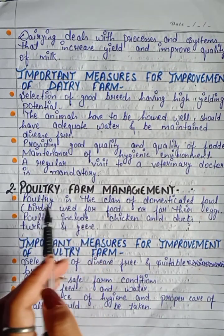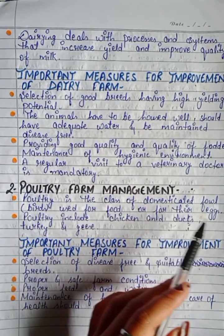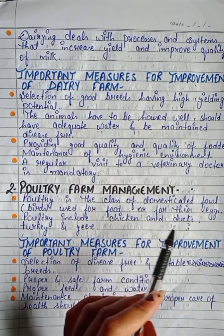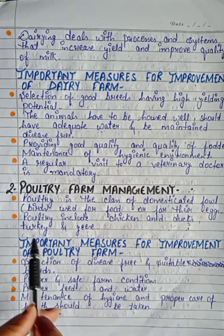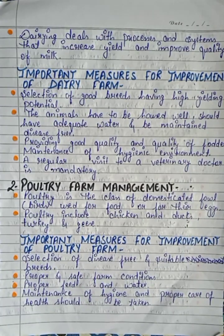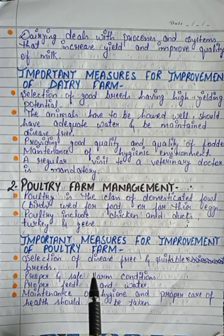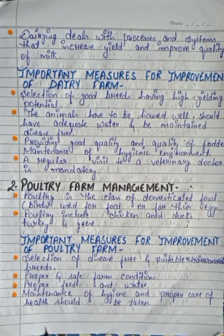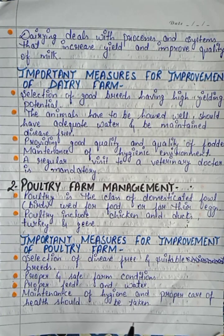Second is poultry farm management. Poultry is a class of domesticated fowls used for food and for their eggs, including chickens, ducks, turkeys, and geese. Important measures for improvement of poultry farming: selection of disease-free and suitable breeds, proper and safe farm conditions, proper feed and water, and maintenance of hygiene and proper care of health.